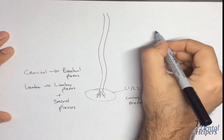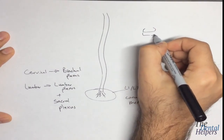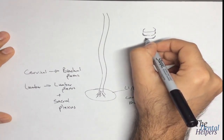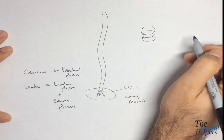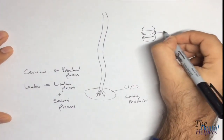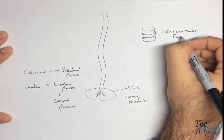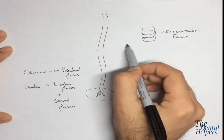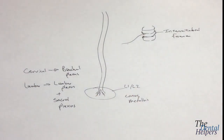We also have to know that in the vertebrae itself there are spaces called intervertebral foramen. This is where the spinal nerves actually exit, and they're going to start innervating different muscles and tissues. This is where we're going to have sensation, motor function, and so forth.